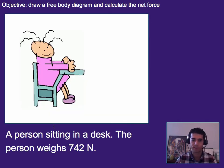Alright, so if you have a person sitting in a desk, the person weighs 742 Newtons, go ahead and draw a free body diagram for them. If you want to, go ahead and pause and see if you can remember what to do.